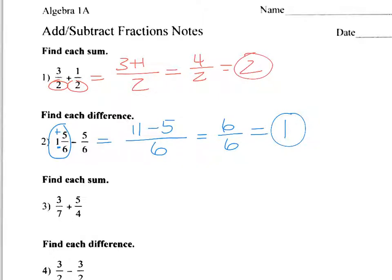When the denominators are not the same, the best thing to do is find the LCM — least common multiple, or least common denominator. We're looking for something that both seven and four will go into. The easy method is to take the denominator of the second fraction and multiply the top and bottom of the first fraction by it, and vice versa, so they share a common denominator.